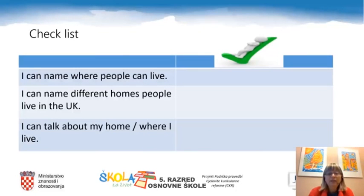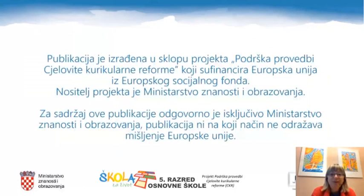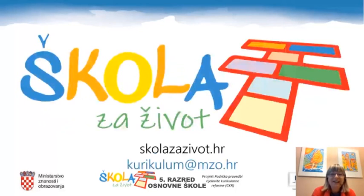It's time for self-evaluation. There are three statements: I can name where people can live. I can name different homes people live in the UK. I can talk about where I live. Think about these statements and put a tick next to them. We have come to the end of today's lesson. I hope you enjoyed it. Until we meet again, bye-bye!